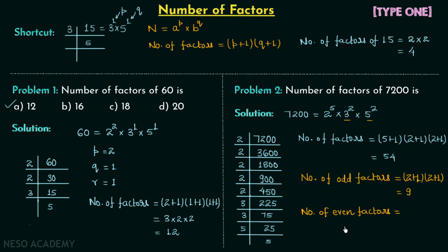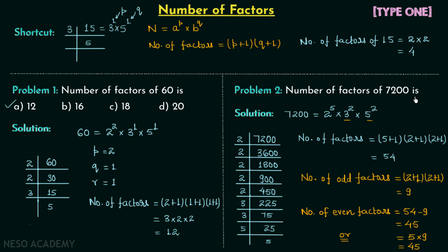Therefore, the total number of even factors = 54 − 9 = 45. There is also another way to find even factors: the power of the even prime number 2 is 5, so the number of even factors = 5 × 9 = 45, giving the same answer. In the next lecture we will solve one more problem on finding the number of factors, but with a different type of number given.